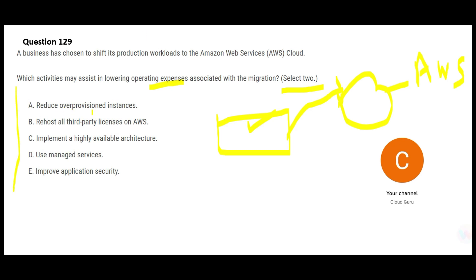Option A says reduce over-provisioned instances. This looks apt — if your instances are over-provisioned, for example you have six EC2 instances but only need three, the remaining three are a waste of compute resources. If you reduce from six down to three or four, you will save on operating expenses. So A is my first answer.